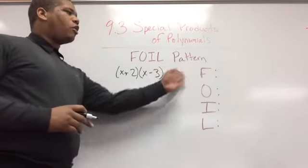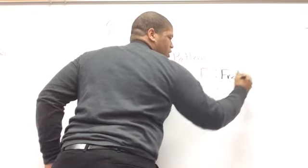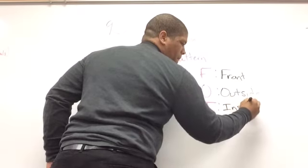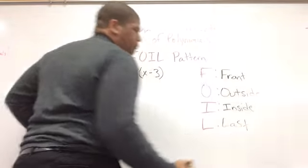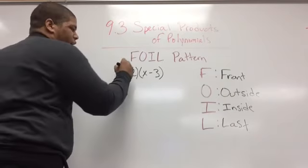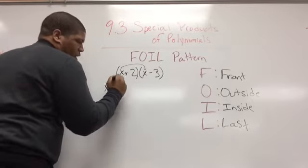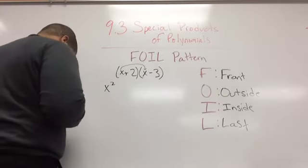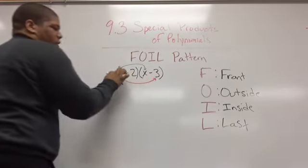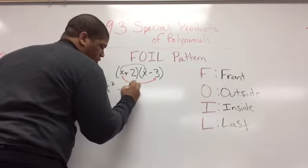Next we're going to look at the FOIL pattern. FOIL stands for Front, Outside, Inside, and Last. So I'm going to multiply in this order. First I'm going to multiply the front two terms — x times x — which gives me x squared. Then I'm going to multiply the outsides — that's this x and this negative 3 because they're both on the outside — which gives me negative 3x.